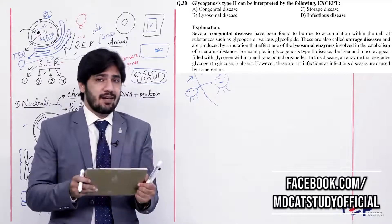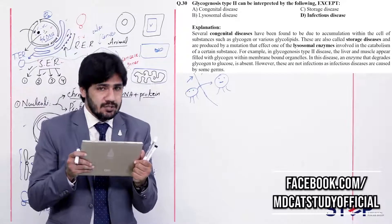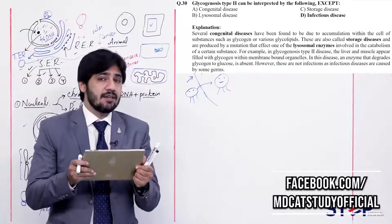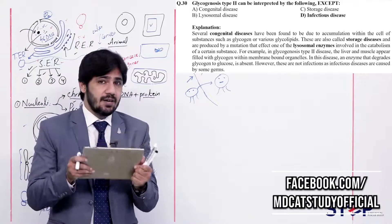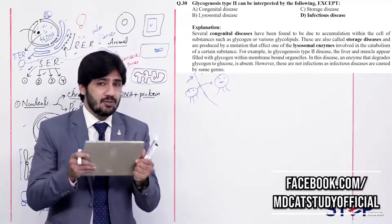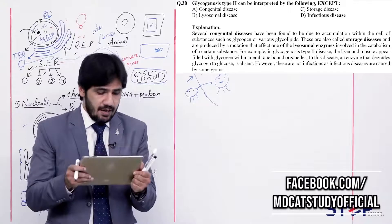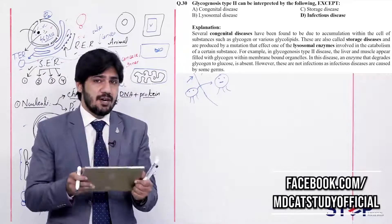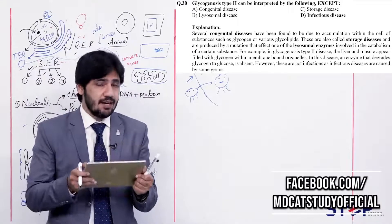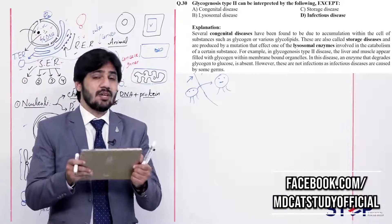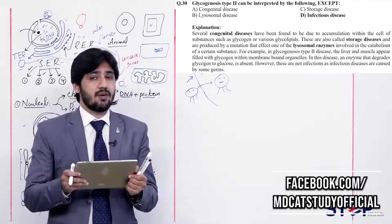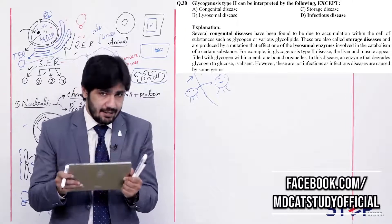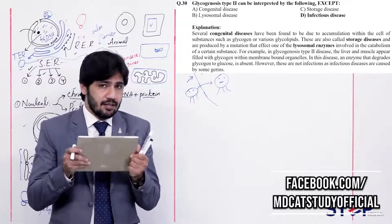Alpha, beta, and charlie all correctly describe glycogenosis type 2 — it is congenital (by birth), lysosomal, and a storage disease. However, it is not an infectious disease. In lysosomal diseases, a DNA mutation occurs, and DNA mutation is not related to infection. So the right answer is delta — infectious disease.